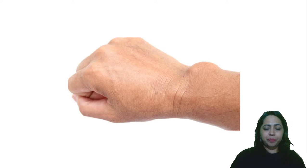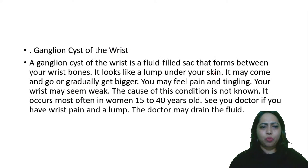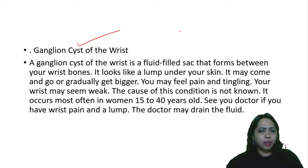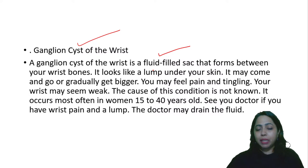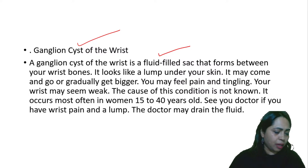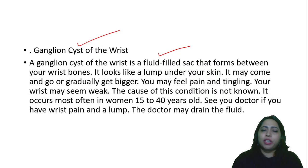Here is a swelling near the wrist region — on the thumb side. This is a ganglionic cyst of the wrist: a fluid-filled sac that forms between the wrist bones, between the carpal bones, radius, and ulna, filled with synovial fluid. It acts like a lump under the skin, may gradually get bigger, and can cause pain and tingling. The etiology is not well understood, and it most often occurs in women between 15 and 40 years of age. It needs to be drained.